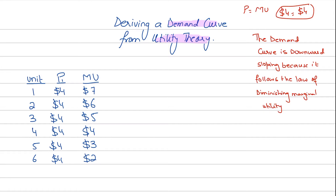A consumer would keep on consuming units till the point where marginal utility equals the price that he's paying. We've already established this in the previous videos on utility theory. This video is specifically focusing on how we can derive a demand curve from it. I've also mentioned in previous videos that the marginal utility curve is equal to the demand curve, and we'll see exactly how in this video.